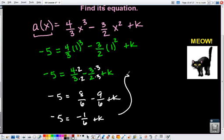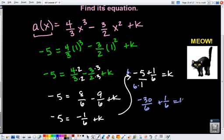So that means that I've got to add 1 sixth to both sides to get k by itself. And now to get a common denominator underneath 5, I'm looking to have a common denominator of 6, so I multiply the denominator by 6 as well as the numerator by 6. So I end up with negative 30 over 6 plus 1 sixth equals k. So we end up with negative 29 over 6 equals k.